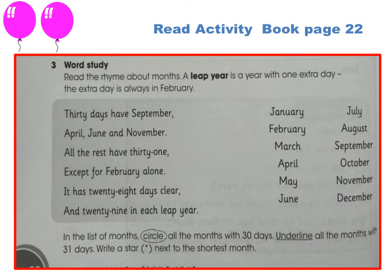Leap year is a year with one extra day. The extra day is always in February. Jadi leap year ini adalah tahun kabisat — tahun yang memiliki hari tambahan, satu hari tambahan, dan hari tambahan ini biasanya ada pada bulan Februari. Untuk tahun kabisat jumlah hari dalam bulan Februari ada 29. Kalau biasanya 28, tapi in leap year jumlah hari dalam Februari ada 29. Nanti boleh dicek di kalender.